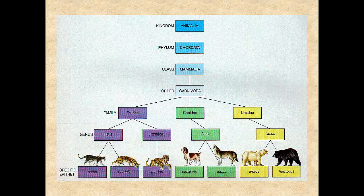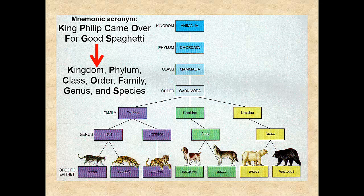Or in biological systems, where we can classify organisms by their similar traits. As an aside, do you know the mnemonic acronym to remember this biological taxonomy? 'King Philip came over for good spaghetti' — Kingdom, Phylum, Class, Order, Family, Genus, and Species. That's a good one.